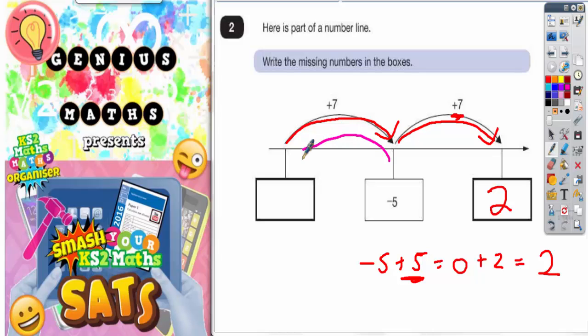So when we go backwards, we've got to do the opposite of what's on the arrow. So if add 7 is going this way, subtract 7 is going the other way. So what we need to do is actually do negative 5, subtract 7.